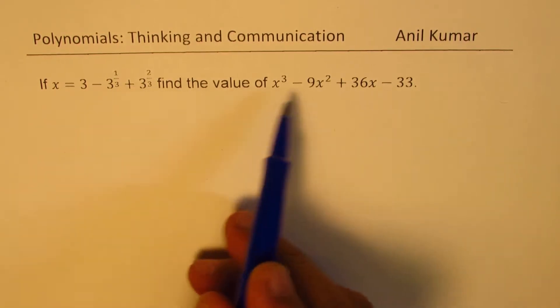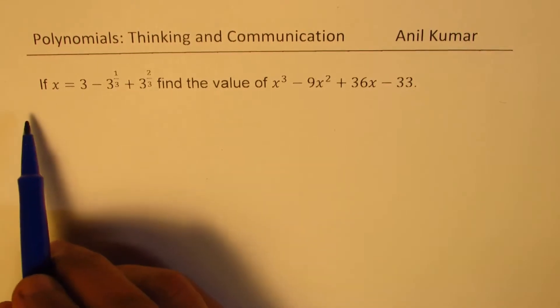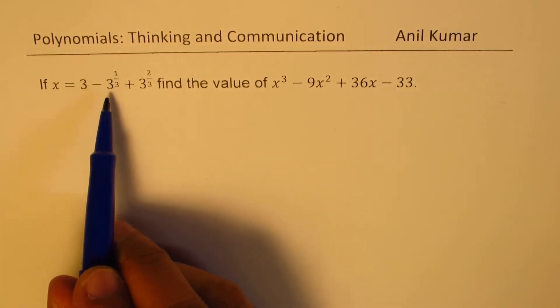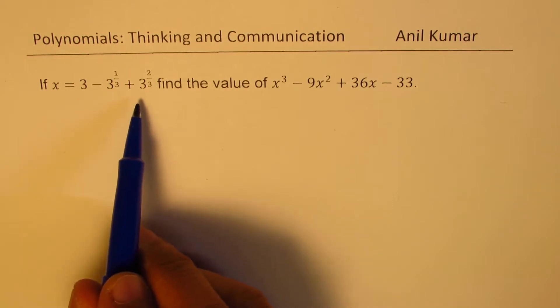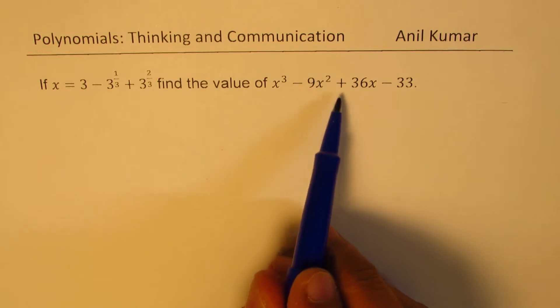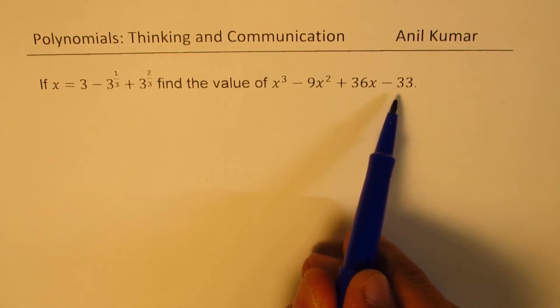However, we'll convert this into a polynomial form. The question is, if x equals 3 minus 3 to the power of 1 over 3 plus 3 to the power of 2 over 3, find the value of x cubed minus 9x squared plus 36x minus 33.